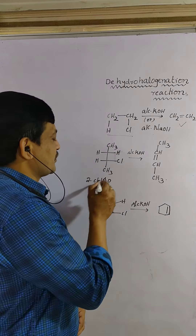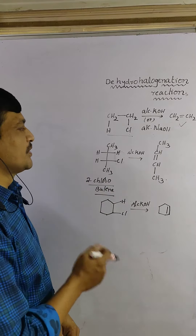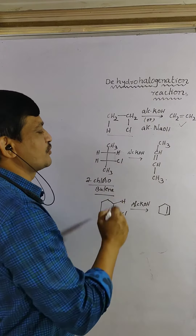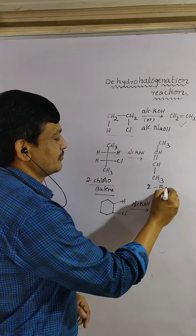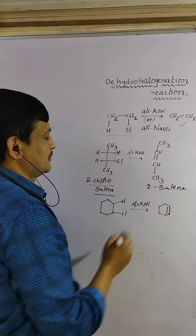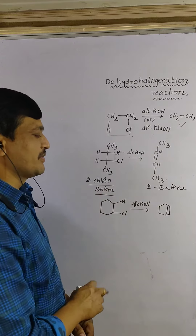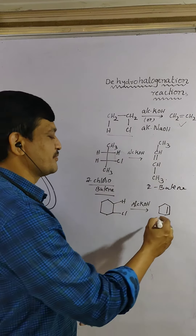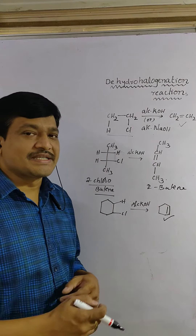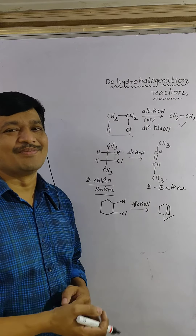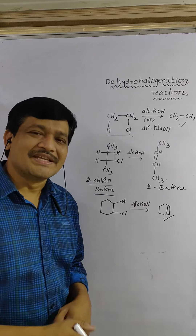2-chlorobutane treated with alkali KOH forms 2-butene. Chlorocyclohexane treated with alkali KOH forms cyclohexene. This reaction is also called an elimination reaction.